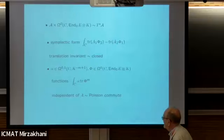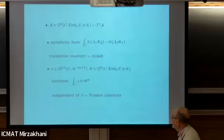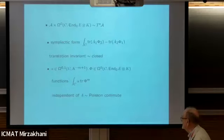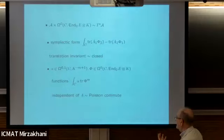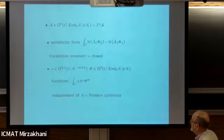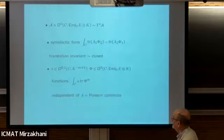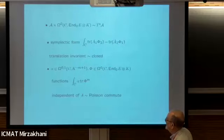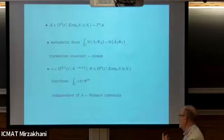If we have a (0,1)-form with values in this bundle, we can pair it with the trace of the nth power of phi to give a (1,1)-form, which we can integrate over C. This gives us a function on this infinite dimensional symplectic manifold. If we have two such functions, then because they're independent of the actual holomorphic structure - translation invariant in a way - they depend on just one set of coordinates, the p's or the q's, and because of that they Poisson commute.